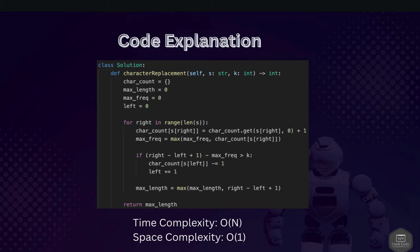For complexity analysis: the time complexity is O(n), where n is the length of the string, because each element is visited at most twice — once when expanding the window and once when shrinking it. The space complexity is O(1), because no matter the input string size, the hash map will have at most 26 characters (uppercase English letters), which is constant space that does not grow with input size.